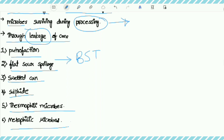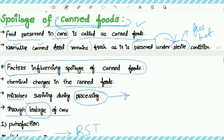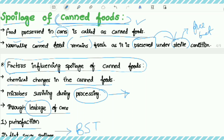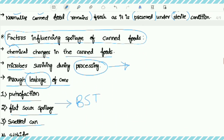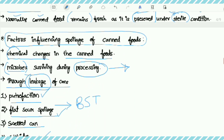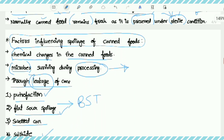Let us recall spoilage of canned foods. The definition: food preserved in cans. Normally these are preserved in sterile conditions, but sometimes they may spoil. The factors are chemical changes, microbes, leakage, putrefaction, flat sour spoilage caused by Bacillus, swollen cans, sulfide spoilage, and thermophilic and mesophilic microbes. This is a short note on the spoilage of canned foods.